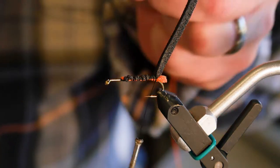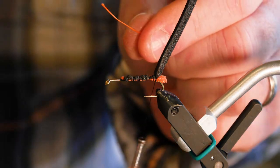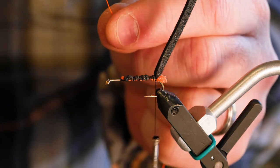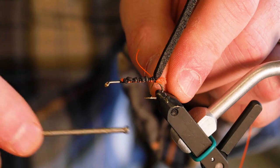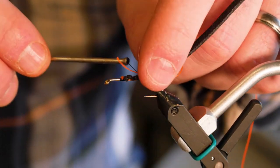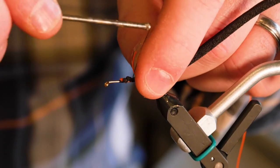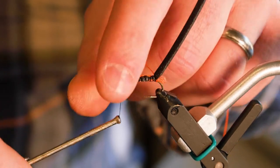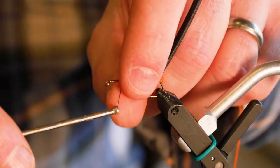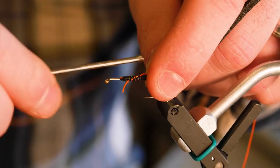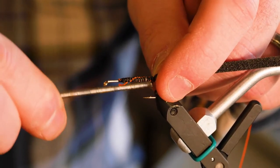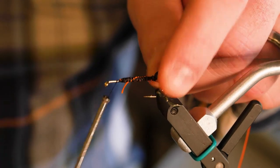Next material is Dacron fly line backing in orange. This happens to be 12 pound. I prefer 20 pound. I didn't have any 20 pound laying around. It really doesn't matter. You're just wanting an orange rib on the fly. That's all you want. Make sure all those materials are tied down tight.